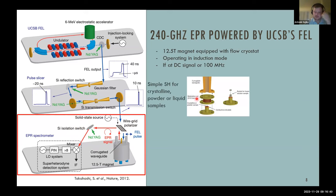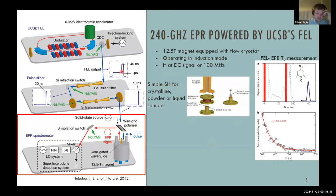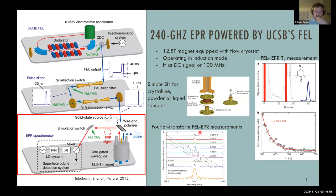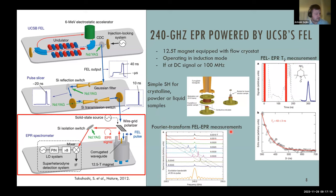The spectrometer uses a simple sample holder for crystalline powder and liquid samples. Past demonstrations include T2 measurements with FEL EPR and echo detection. Because the narrow bandwidth pulse is used, almost 1 GHz of spectrum can be excited simultaneously. Here is an example of free induction decay FEL EPR measurement on a P1 diamond center. This old spectrometer works — it's almost an engineering masterpiece that operates relatively well.